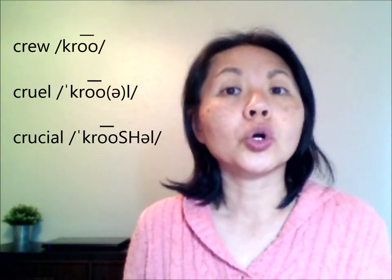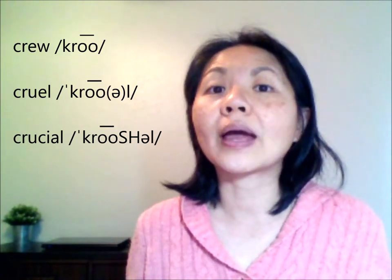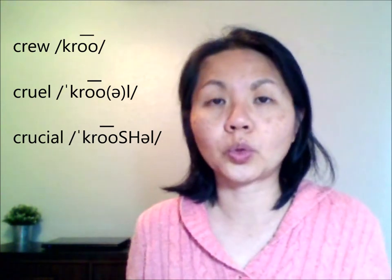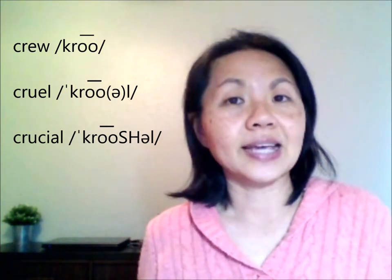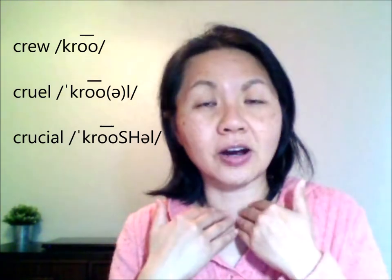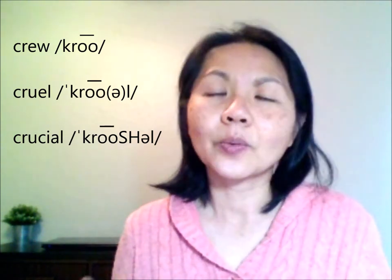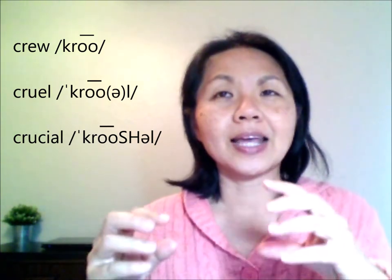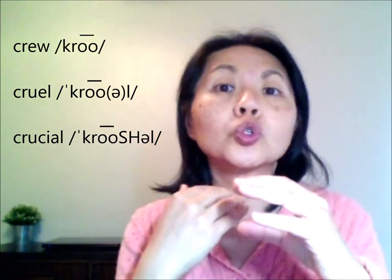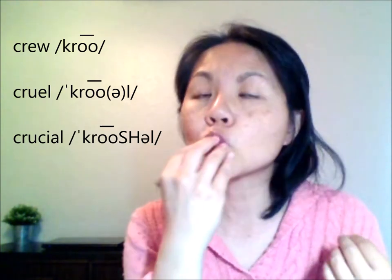Crew. Crew. So again, C-R and then 'ooh'. Crew. Crew. The second word here is a little bit tricky. You're going to have the CRU — 'croo' — and then you're going to make that dark L sound. So 'all'. Cruel. I think what's difficult here for many English learners is making that transition from 'ooh' to 'ul'.